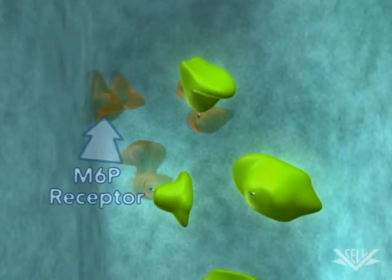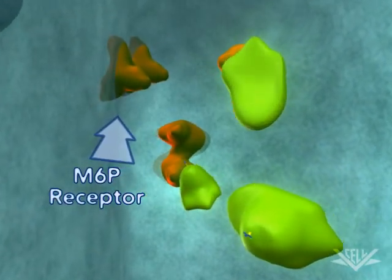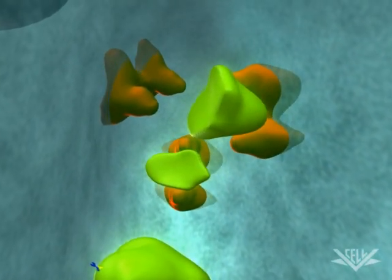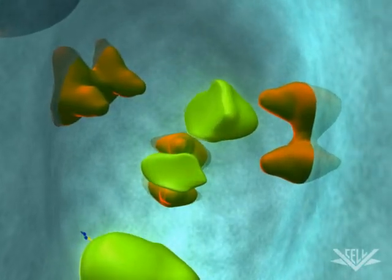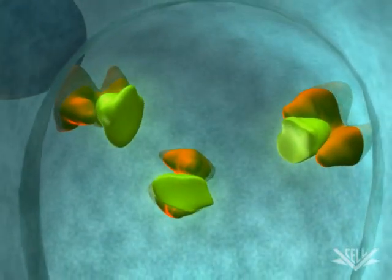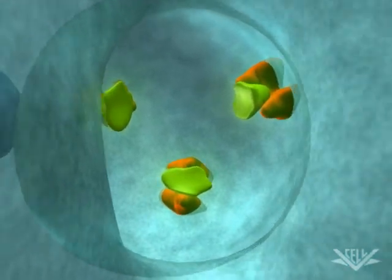Once modified, the hydrolase is bound to the mannose-6-phosphate receptor protein through the mannose-6-phosphate molecule. The receptor has a domain that extends through the trans-Golgi membrane. Through the interaction with this receptor, the hydrolase is associated with the trans-Golgi membrane.